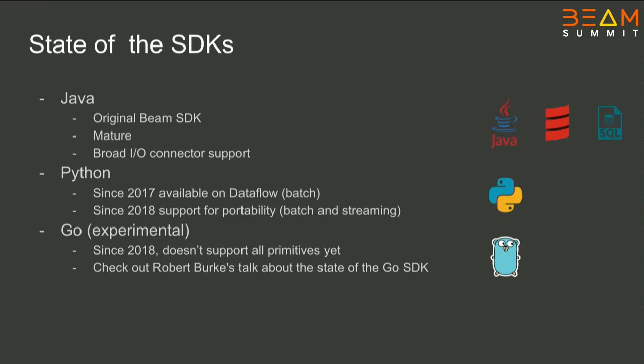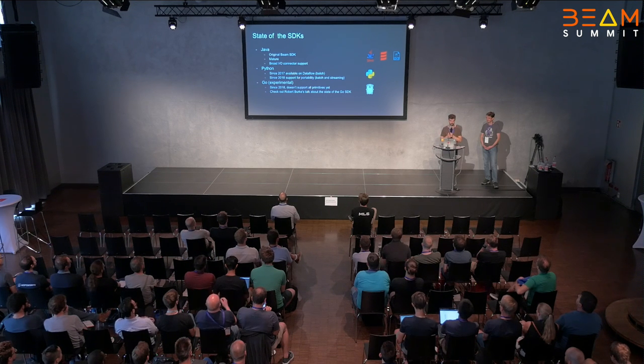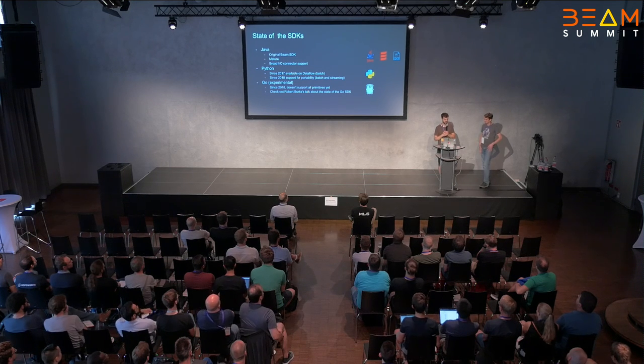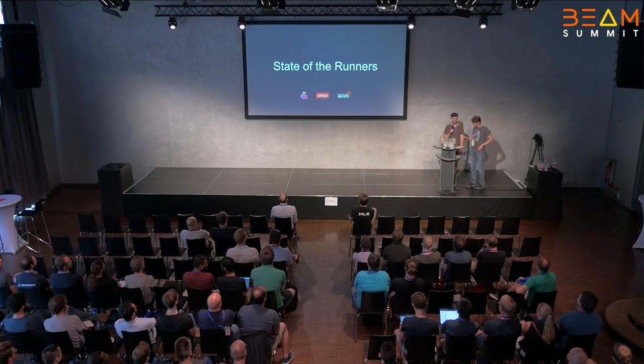Where are we with the state of the SDKs? Java is very mature. Python is now also very well supported on the Flink runner and on Dataflow, and Spark has batch support already. Go has good batch support but is still lacking streaming features. There's a talk by Robert on the Go SDK — go see that talk and he will walk you through it. With that, I'll hand over to Thomas, and we'll hear about the state of the runners.